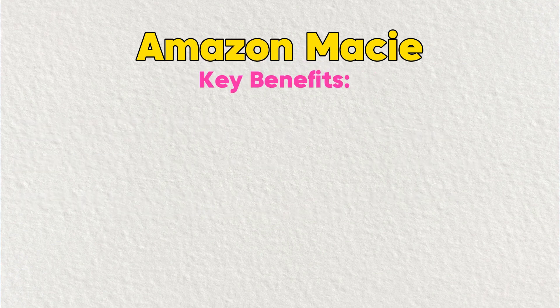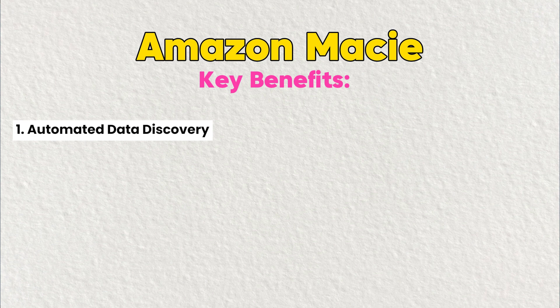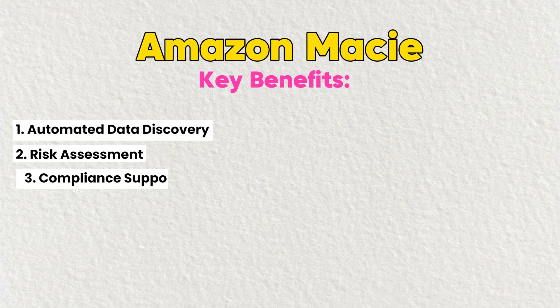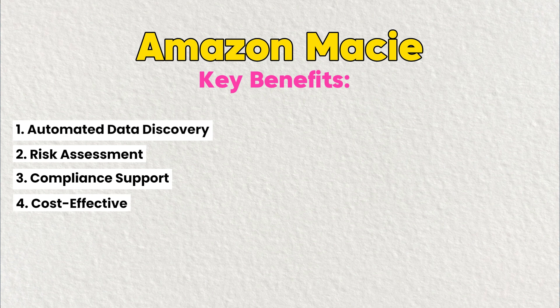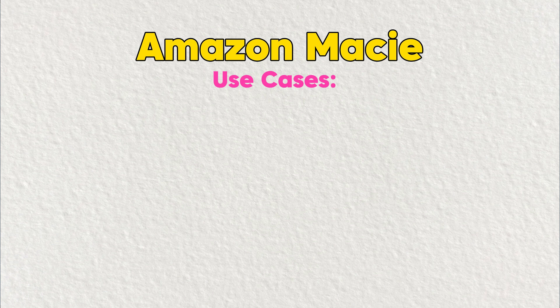The key benefits of Amazon Macie are: first, automated data discovery — Macie identifies sensitive data without manual effort; second, risk management — it provides insights into data breaches and vulnerabilities; third, compliance support — Macie helps meet regulatory requirements such as GDPR and HIPAA; and fourth, cost effectiveness — it reduces the time and resources you need to spend on data security.